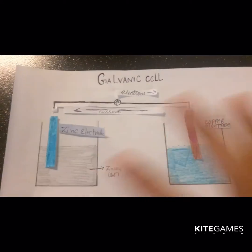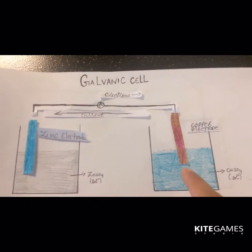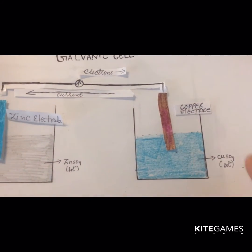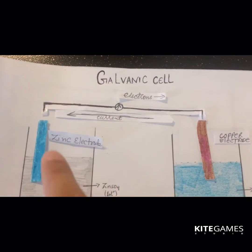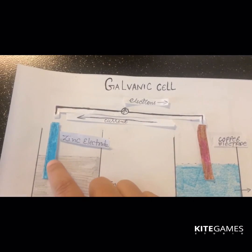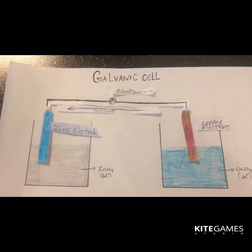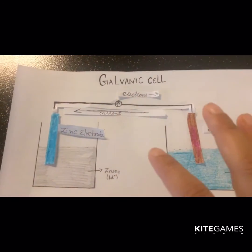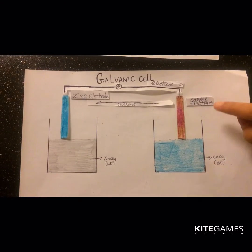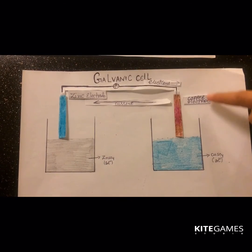So this is our galvanic cell: it contains two beakers — in the left beaker there is a zinc electrode dissolved in zinc sulfate solution, and in the right beaker a copper electrode dipped in copper sulfate solution. When the two electrodes are joined with a copper wire, a chemical reaction takes place, electrons flow from the zinc electrode to the copper electrode, and electric current flows from the copper electrode to the zinc electrode.